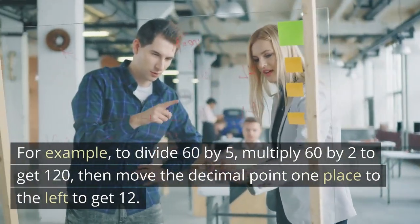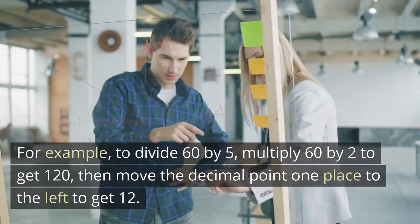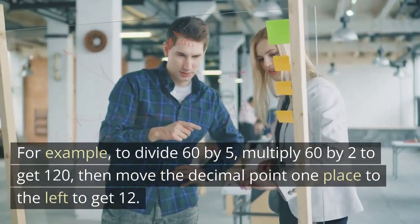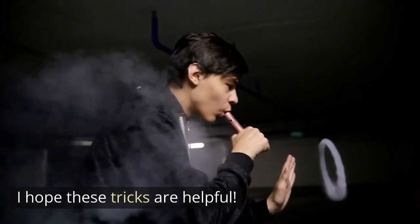For example, to divide 60 by 5, multiply 60 by 2 to get 120, then move the decimal point 1 place to the left to get 12. I hope these tricks are helpful.